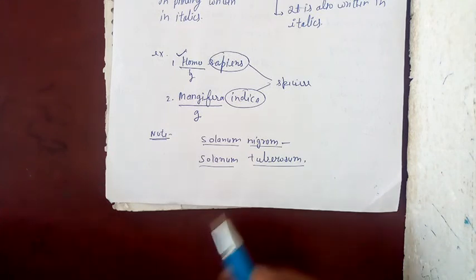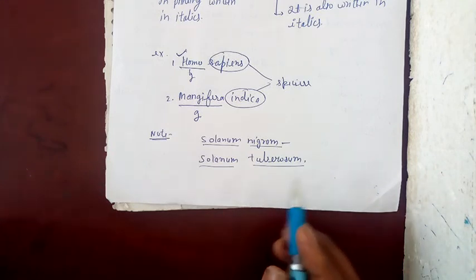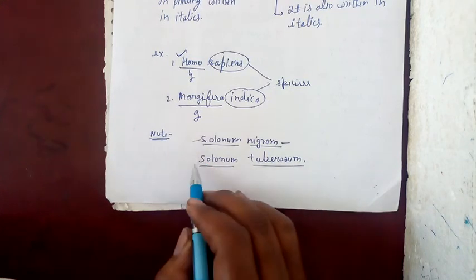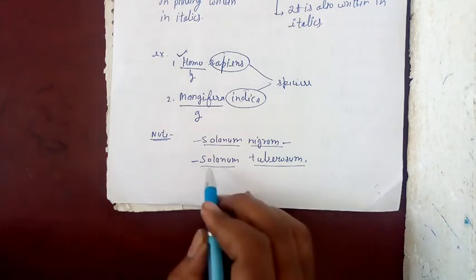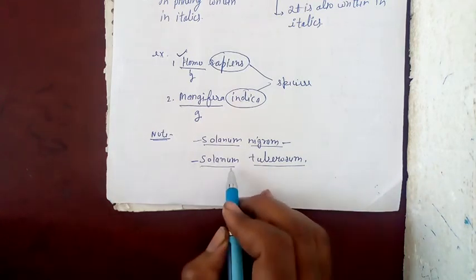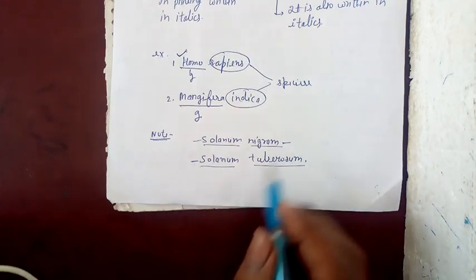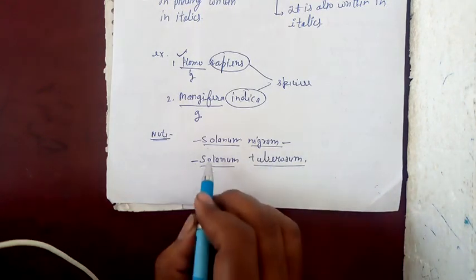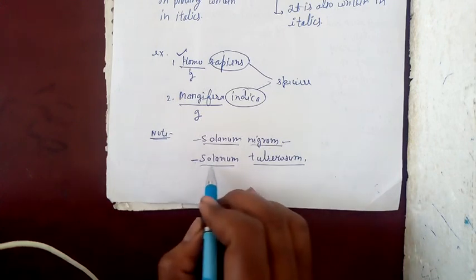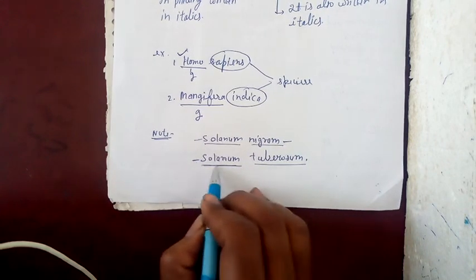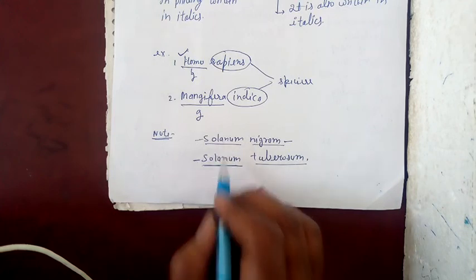Solanum here and Solanum here - the genus is common. This is potato. So Solanum is the genus name, which is the same for related plants but with different species names.